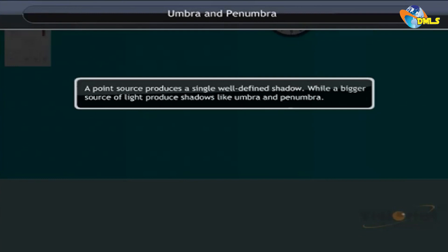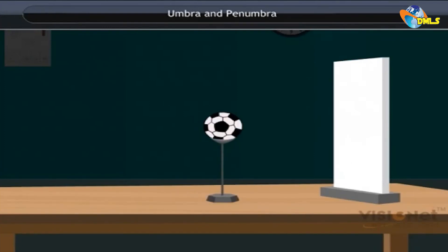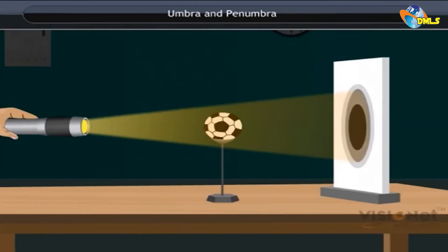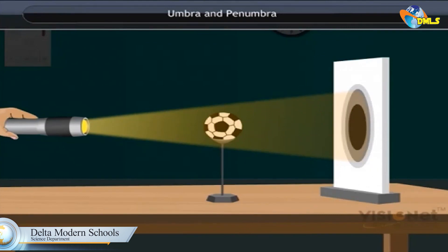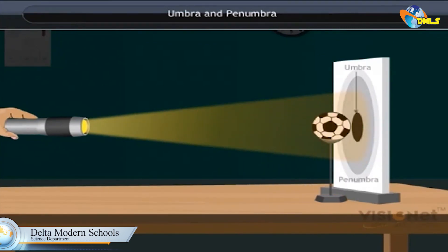Let us carry out an activity to understand umbra and penumbra. Place a ball fixed on a stand and a screen in front of it, such that the screen is bigger than the height of the ball. Now light a torch from the other side of the ball and see its shadow formed on the screen. Umbra is the part which is in complete darkness and receives no light from the torch, while penumbra is the part which is in partial darkness and receives some light from the torch.